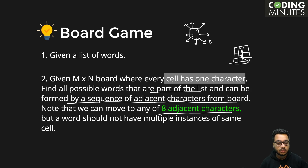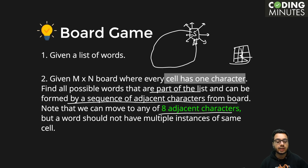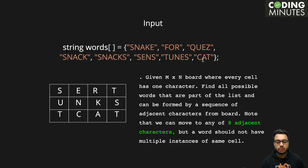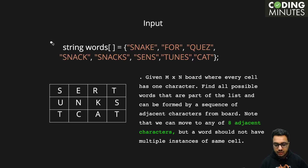Every cell has eight neighbors except for cells on the boundary. A word should not have multiple instances of the same cell — you cannot traverse a path and then come back to the same character. For example, if the word starts with 's', you cannot traverse and then come back to 's'.